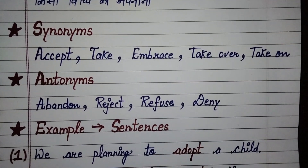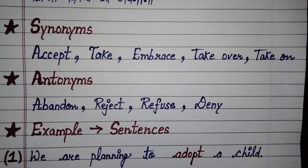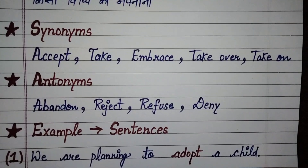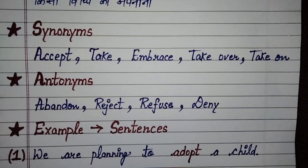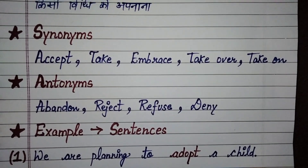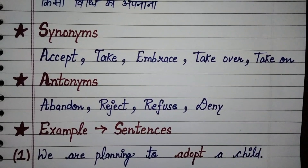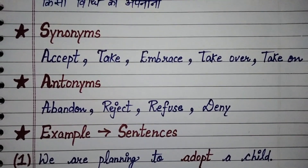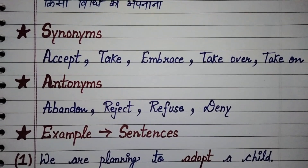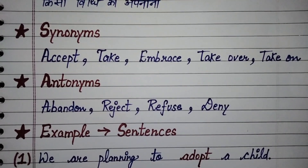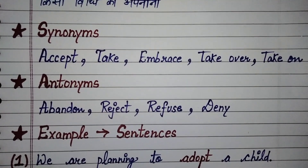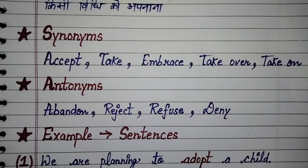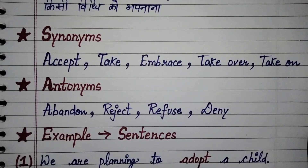Ab dekhiye, adopt ka meaning kya hota hai — kisii bachche ko godh leena kaanunan rup se, yaa phir kisii cheez ko, koi vidhi ko apnaana. So uska opposite kya hoga? Apnaane ka opposite hota hai tyaag dhena, chhod dhena. So antonyms, yaani ki opposite words of adopt, are: abandon — abandon ka matlab hota hai tyaag dhena — reject, refuse, and deny.